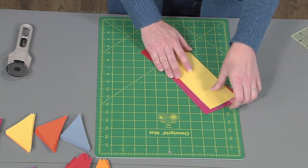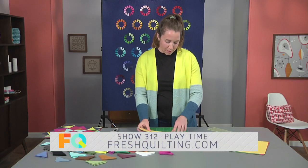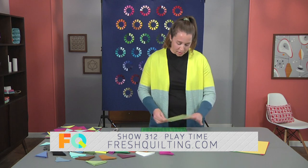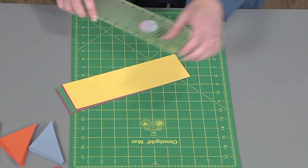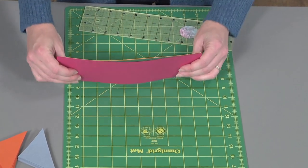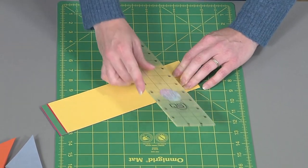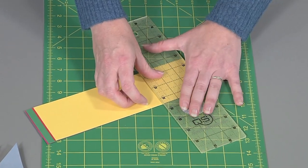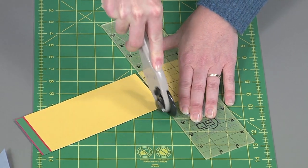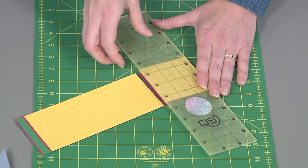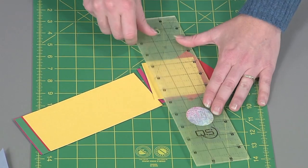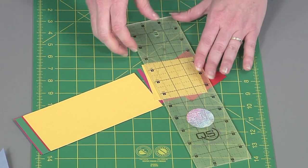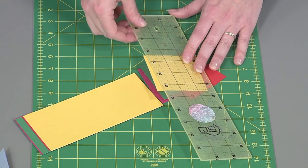Once I've cut a bunch of strips, I can turn them and cut three inch squares. And right now I'm using the lines on my ruler to cut this, but you can also use the lines on your mat if you'd like.